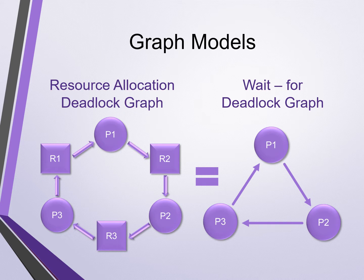Let's talk a little bit about graph models. The first figure shows an example of a resource allocation graph, the same type we showed in our simple example. In this case, P1 holds R1 and requests R2, which is held by P2. P2 requests R3, which in turn is held by P3. Finally, P3 requests R1, held by P1, completing our circular wait. All processes are idle, waiting on another to run before it can begin. This is a deadlock.